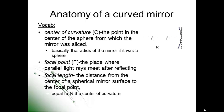The first one is called the center of curvature — that's the point in the center of a sphere in which the mirror was sliced. Imagine taking a baseball and finding the exact center of that baseball; that's what we mean by the center of curvature. The focal point is the place where parallel light rays would meet after they reflect off of the mirror. The focal length is the distance from the center of the spherical mirror to the focal point, and it just so happens that the focal point is half the distance to that center of curvature.